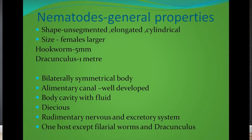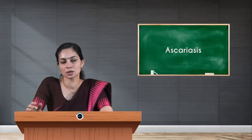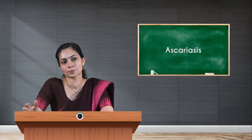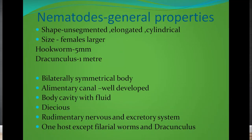Today we are going to see an important nematode infection — ascariasis. First, let's look at the common properties of nematodes. Nematodes have a body structure that is unsegmented, elongated, and cylindrical. Females are always larger in size, ranging from 5 millimeters in Hookworm to one meter in Dracunculus. The body is bilaterally symmetrical with a well-developed alimentary canal and a body cavity filled with fluid. Male and female worms are separate — they are called dioecious.